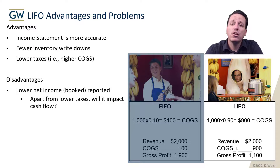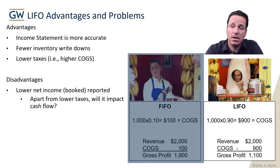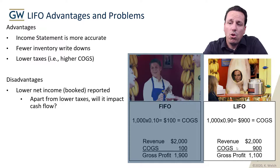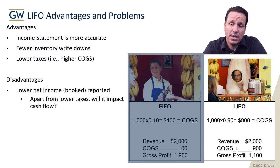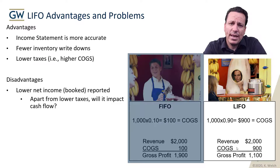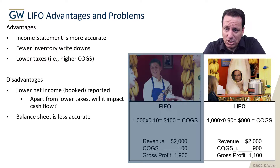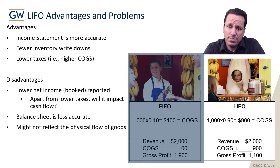The disadvantages of LIFO: you're going to have a lower booked net income. Remember, cash is always the same — the booked net income will be lower. Apart from lower taxes, will this lower booked net income impact cash? No. But if you do have lower taxes in the period, that could have a positive cash effect. If you assume away the tax effect, will it impact cash? No. So you will book lower net income, but that's an accrual item. The balance sheet will also be less accurate under this method.